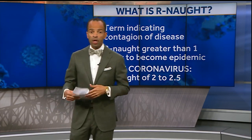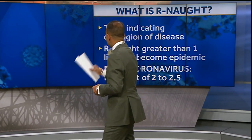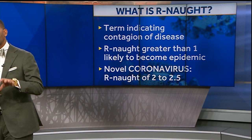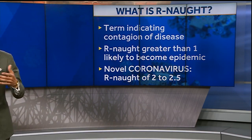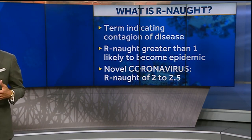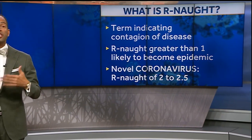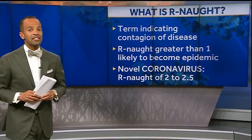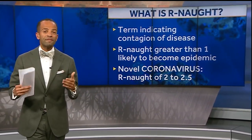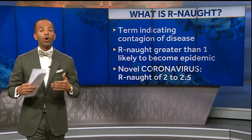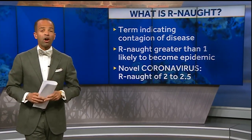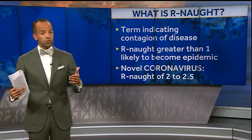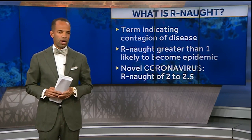When you start thinking about other R-naught values, what are some examples? We would have something like measles. Let's talk about that — the R-naught of measles is almost 15. What about the R-naught of Ebola? The R-naught of Ebola is like 2 to 2.5. Coronavirus is about 2 to 2.5 as well.